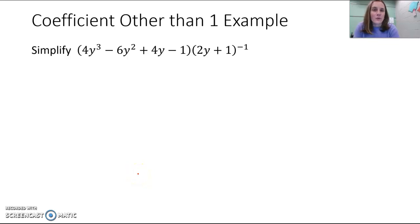So we're going to try this example another way. What we saw before is that if you have a coefficient other than 1 when you're trying to perform synthetic division, you have to divide by that coefficient in order to rewrite it in that form where you have x minus r.